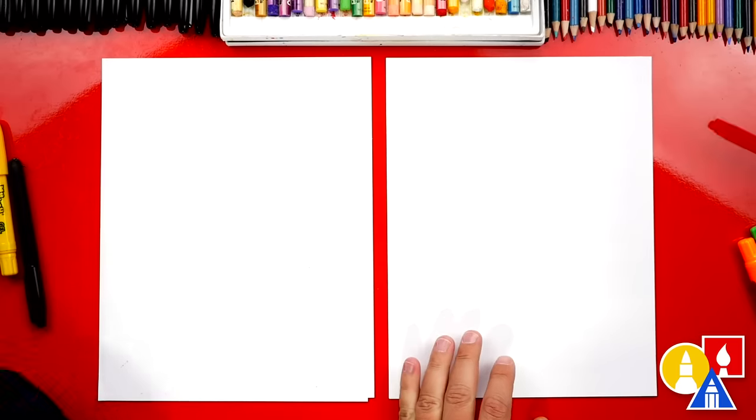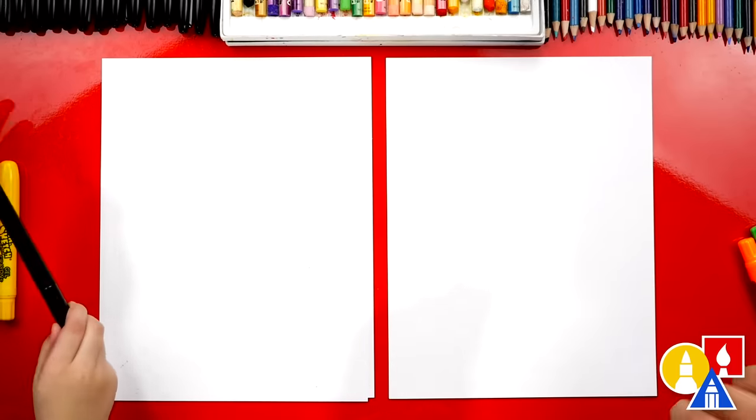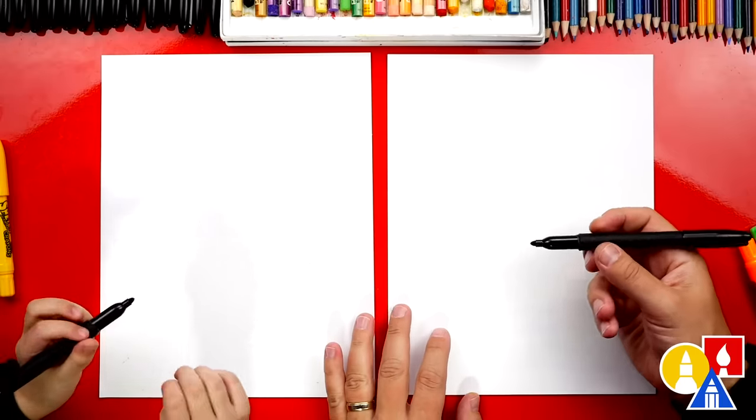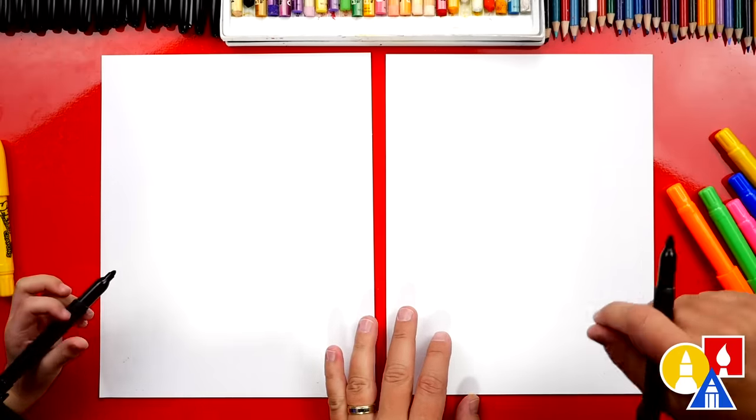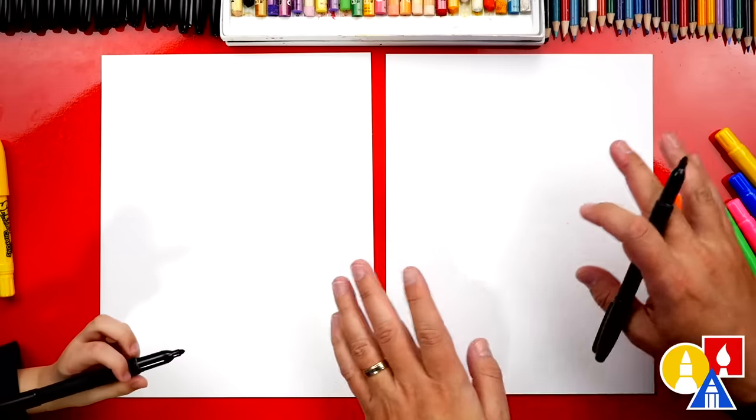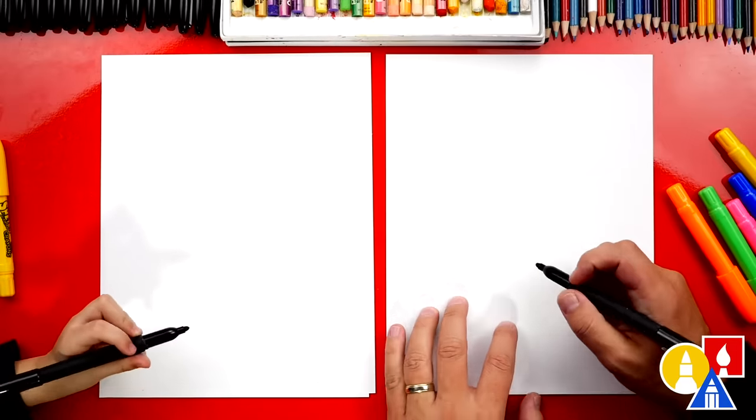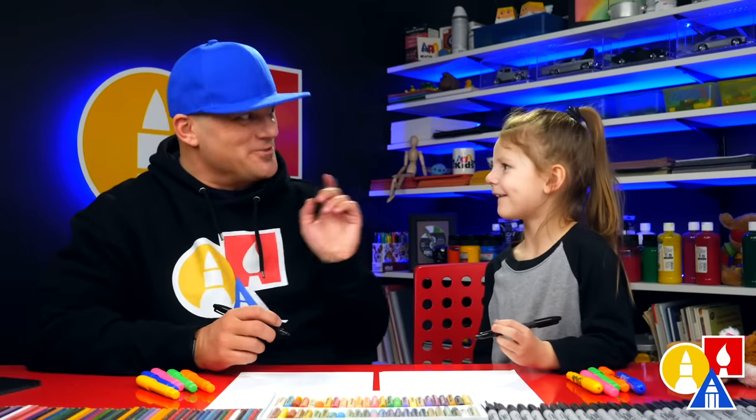Now you could also use black, but we're gonna use black markers to draw with. The reason why we're using a black marker is because we're using gel crayons. And when we color with the crayons, it makes the black smear. So we're gonna use markers first so it doesn't smear.